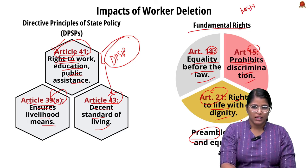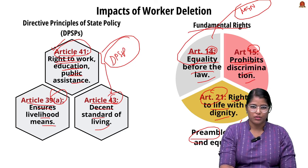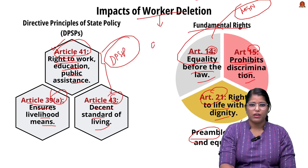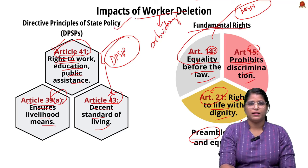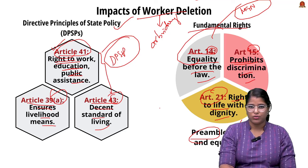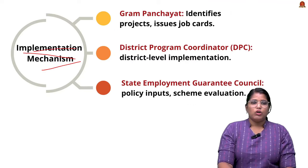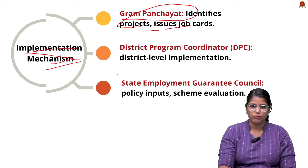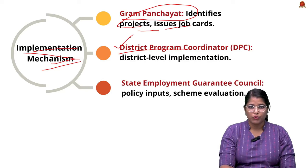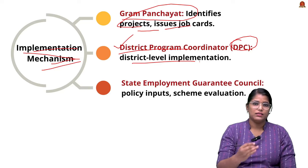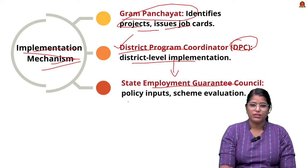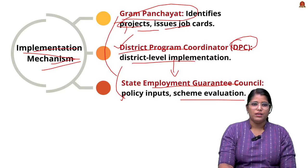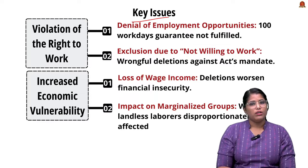MGNREGA is based on all these constitutional provisions. Arbitrary worker deletion violates these fundamental rights and DPSP principles. The implementation mechanism involves Gram Panchayats at the grassroot level identifying projects and issuing job cards. At the district level, a District Programme Coordinator (DPC) handles implementation. Above that, the State Employment Guarantee Council provides policy inputs to both the state and Gram Panchayat and helps in scheme evaluation.